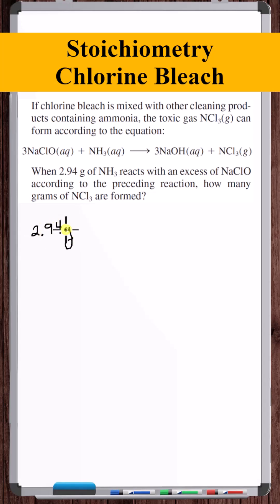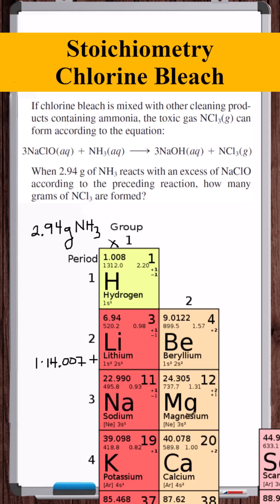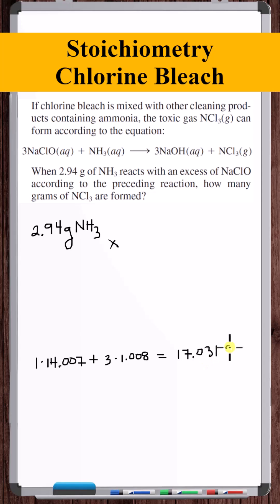So we start with 2.94 grams of ammonia. How many moles of ammonia is this? The molar mass of ammonia: we have one nitrogen atom, molar mass 14.007, three hydrogen atoms, molar mass 1.008, giving us 17.031.